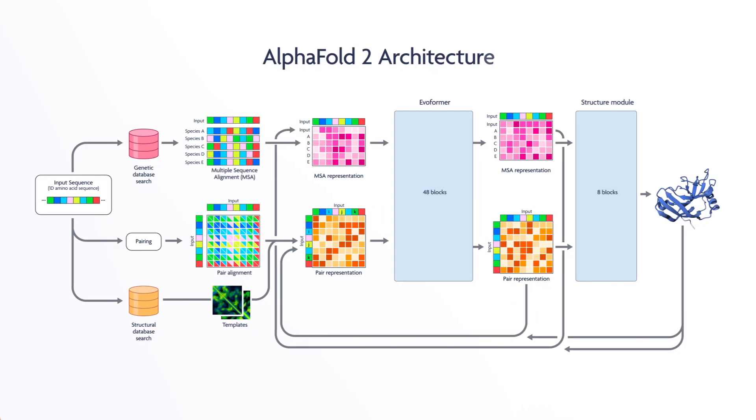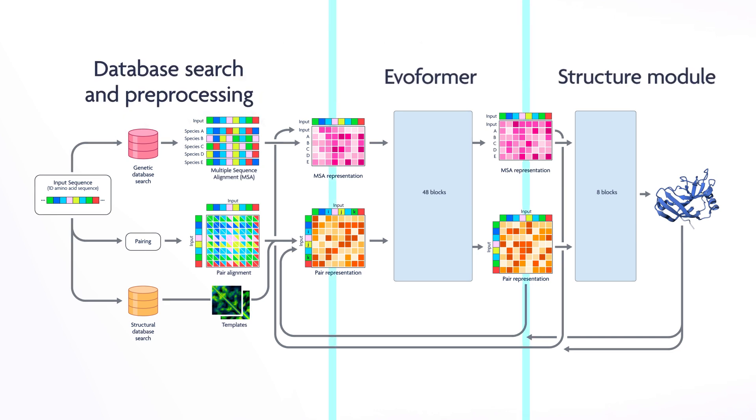But how does AlphaFold 2, the 2021 iteration of AlphaFold, speed up the process of obtaining useful 3D protein structure models? Here is a simplified diagram of AlphaFold 2's architecture. We'll break it down into three sections and start here.